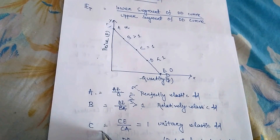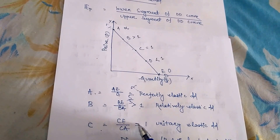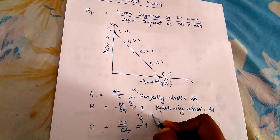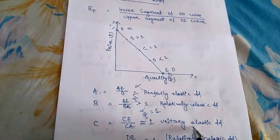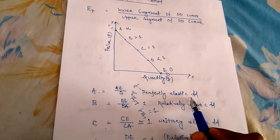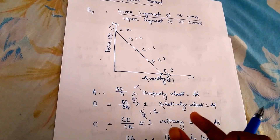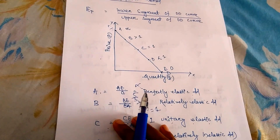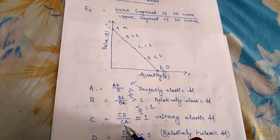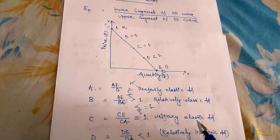At point C: lower segment CE equals upper segment CA, so CE/CA = 1 → unitary elasticity of demand (like 5/5 = 1). At point D (between C and E): upper segment is larger than lower segment, e.g., 3/5, giving a value less than 1 → relatively inelastic demand. At point E (the bottom): lower segment is 0 and upper segment is EA, so 0/EA = 0 → perfectly inelastic demand. So the five types are: perfectly elastic, relatively elastic, unitary elastic, relatively inelastic, and perfectly inelastic demand.